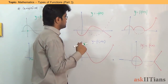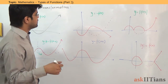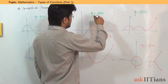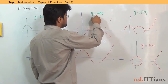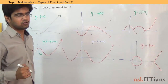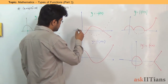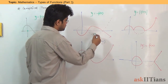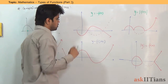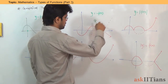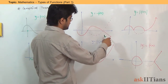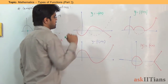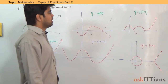Moving on to y = −f(x): whatever the values of f(x) are, there is a minus sign applied to all of them. So positive values become negative, and negative values become positive. The dotted line represents the original graph, and the new graph is its reflection — positive values have become negative because of the minus sign.